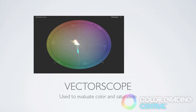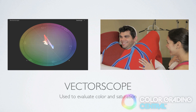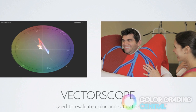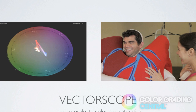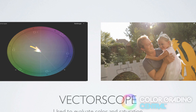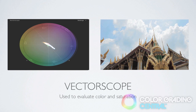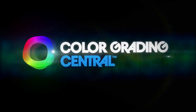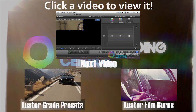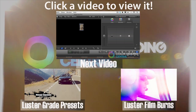A nice feature of Final Cut Pro X scopes is that the trace is colored, making it easier to identify the colors from the image on the scopes themselves. This example shows a really strong red from the heart suit, and we can even see the blue trace from the blue veins on the heart. In the next example we can see yellow from the dinosaur in the background. And in this last example we can see the blue from the sky as indicated by the blue trace. I hope this tutorial has been helpful — next we can begin color correcting. We'll see you next time.